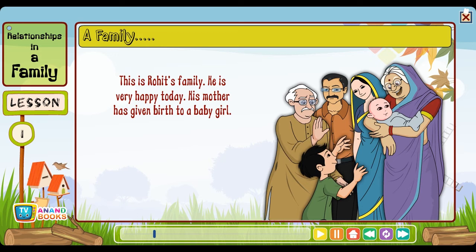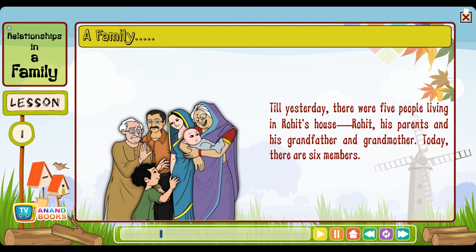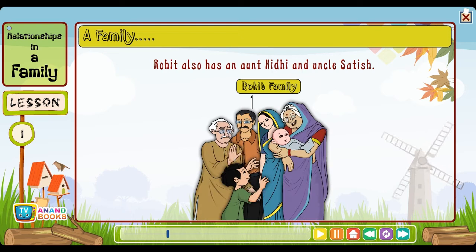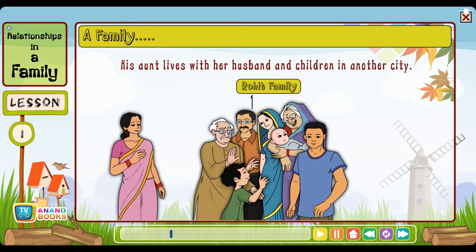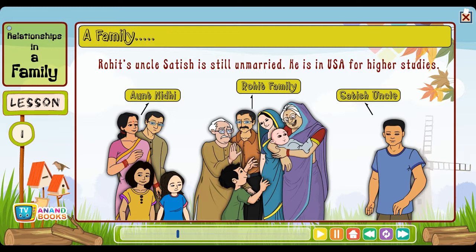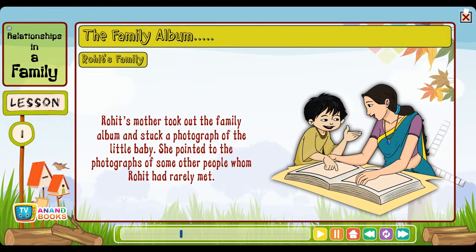Families always get together on occasions like festivals, New Year and birthdays. This is Rohit's family. He is very happy today — his mother has given birth to a baby girl. Till yesterday there were five people living in Rohit's house: Rohit, his parents, and his grandfather and grandmother. Today there are six members. Rohit also has an aunt Nidhi and uncle Satish. His aunt lives with her husband and children in another city.